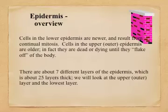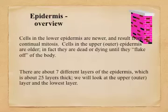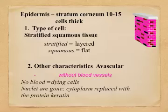As an overview of the epidermis: the cells at the bottom or underside are newer cells that continually undergo mitosis — that's how you get new skin. The cells on the upper or outer epidermis are actually dead or dying and eventually flake off. There are about seven layers of the epidermis, roughly 25 layers thick on average, but we're only going to study the outermost and the lowest layer — the stratum corneum is the outermost.